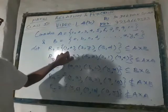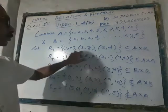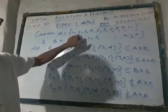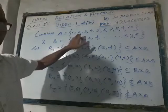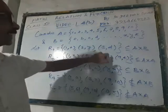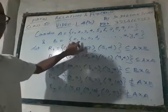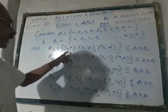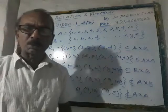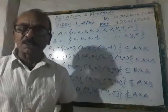Just see the first components of the elements of R1: 1, 2, and 3. Do 1, 2, and 3 lie in A? Yes, they lie in A. What about the second components — a, y, and d? Yes, a, y, d are elements of B. Naturally, R1 is a subset of A cross B. So this is the only way to recognize whether a given set is a subset of A cross B or not.